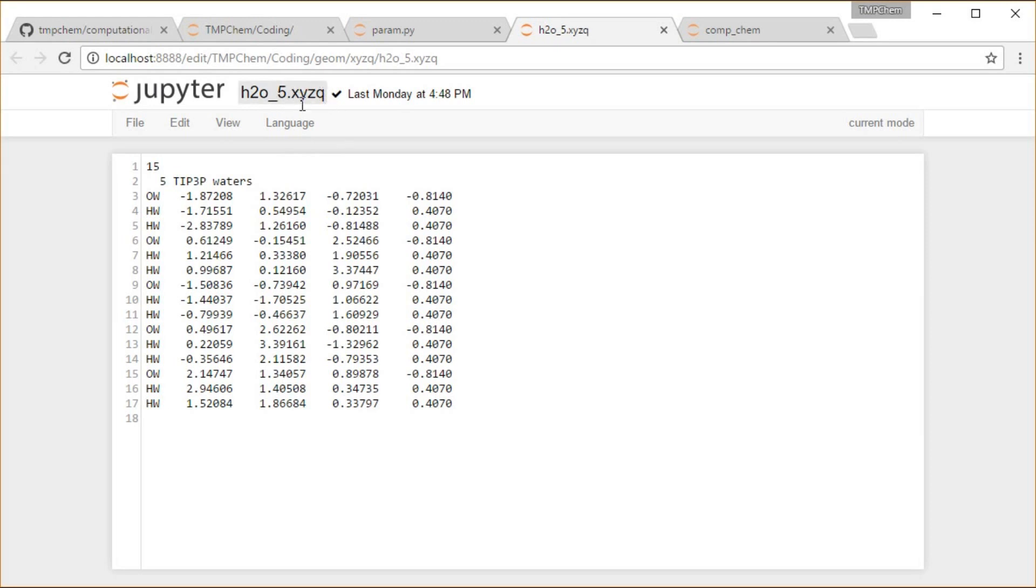This is what I'm calling an XYZQ file, another file format I just made up. It looks exactly the same as an XYZ file, except in addition to having the atom type XY and Z coordinate, we also have the atomic partial charge as a fourth additional real number column.